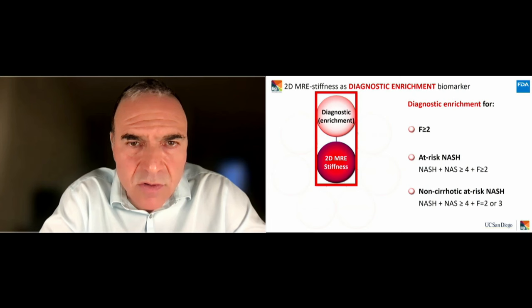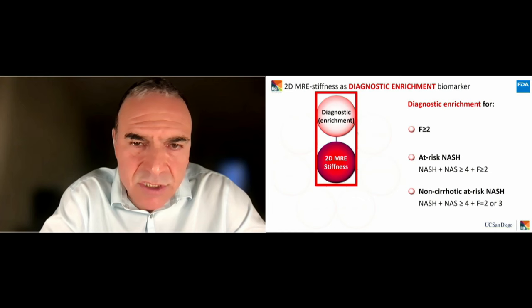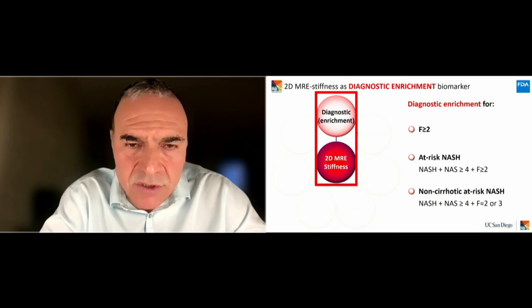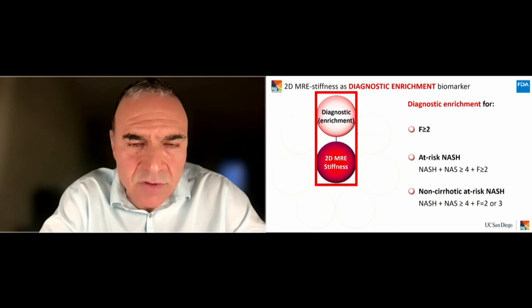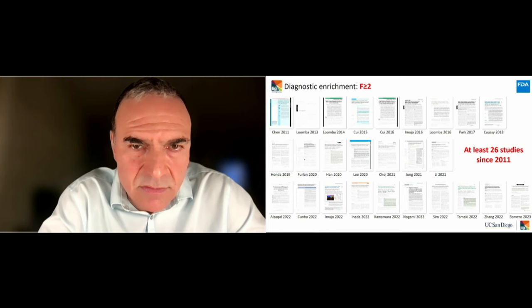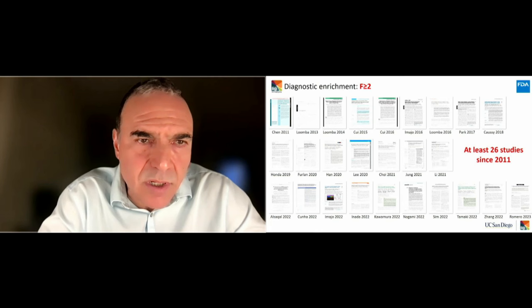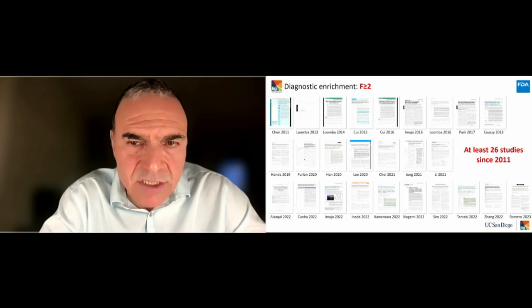Let's start with diagnostic enrichment, broken into three subcategories: detection of patients with fibrosis F greater than or equal to 2; detection of patients with at-risk NASH, defined as the presence of NASH with a NAFLD activity score greater than or equal to 4 and a fibrosis stage of greater than or equal to 2; and non-cirrhotic at-risk NASH, which refers specifically to patients with stage 2 or stage 3 fibrosis. Since 2011, there have been at least 26 published studies examining the diagnostic performance of 2D MR elastography for detection of fibrosis greater than or equal to 2.